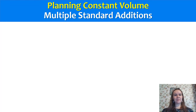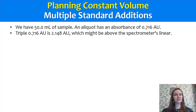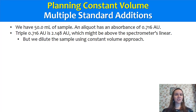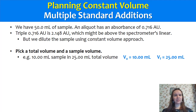Next example: planning constant volume multiple standard additions. Again, we decide based on our original information. If more sample is available — say 50 mils — we take an aliquot, measure its absorbance with UV-vis spectroscopy, and get 0.716 absorbance units. If we triple that, we'd get an absorbance of about 2.148, which might be above the spectrometer's linear range. But that's okay, because with the constant volume approach you dilute your sample with standard and water until all samples are diluted equally. So we pick a total volume and a sample volume — for example, 10 mils of sample in 25 mils total volume. V_0 is 10 mils and V_final is 25 mils.